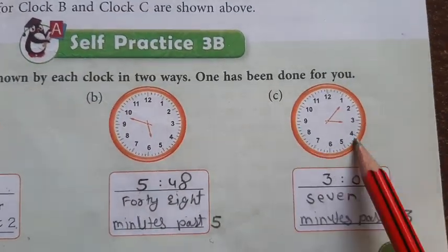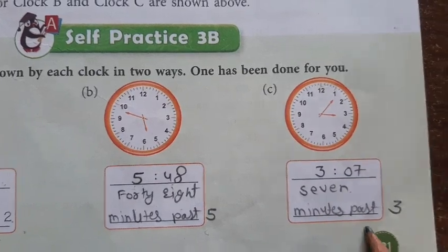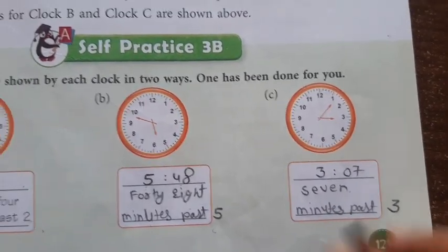Then, 3 hours 7 minutes. So, 7 minutes past 3. What do you say? 7 minutes past 3.